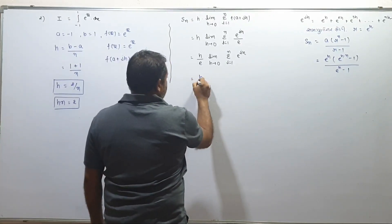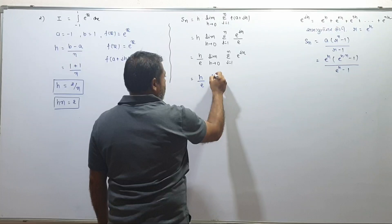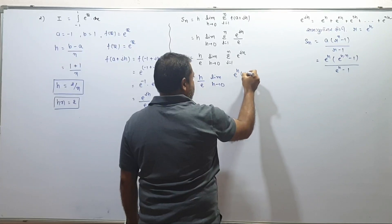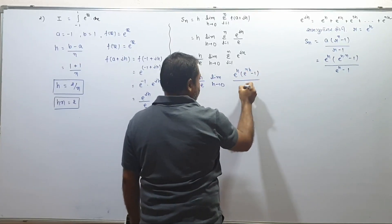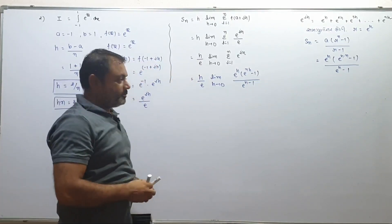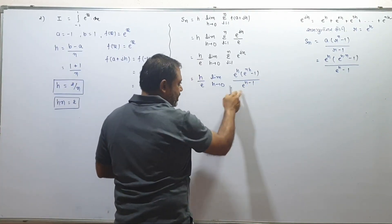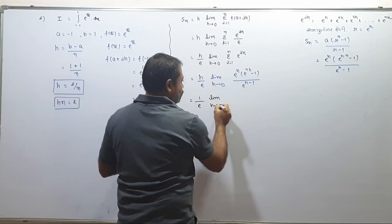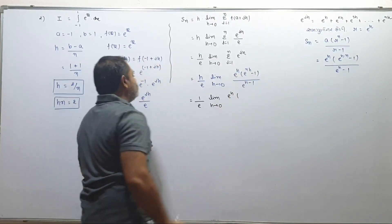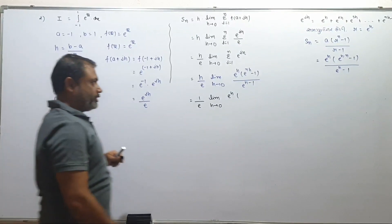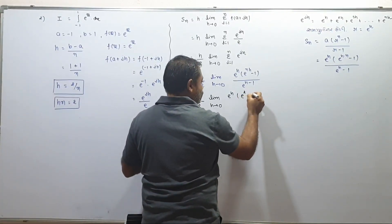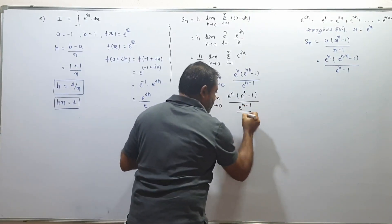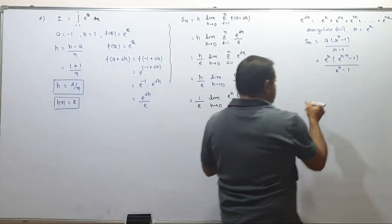So we can write: limit h tends to 0 of [e^h · (e^(nh) - 1) / (e^h - 1)]. Now nh equals b minus a equals 2, so e^(nh) equals e². Also using the standard limit: lim(h→0) (e^h - 1)/h = 1.